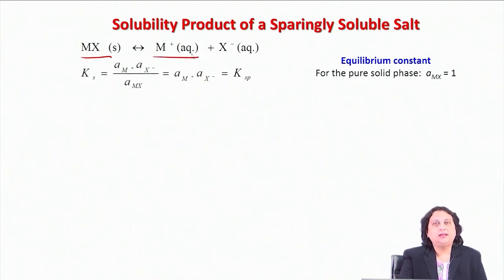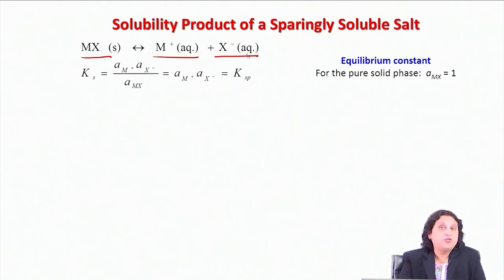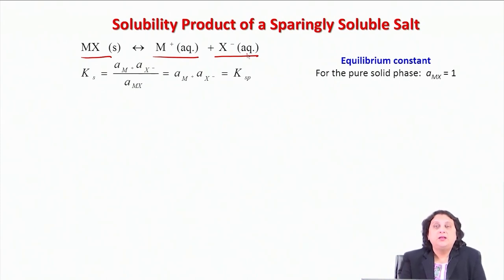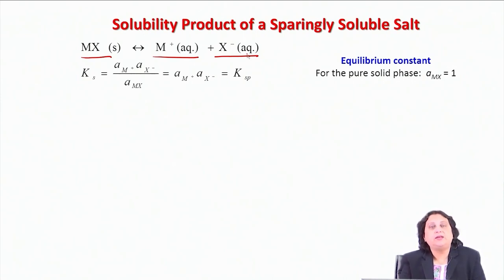The salt produces M⁺ ions and X⁻ ions in the aqueous medium. Since it is a sparingly soluble salt, only a very small concentration of these ions will be present. For example, if you measure the conductance of an oxalic acid solution (a good solvent), it is something like 3 millisiemens. But if you take a sparingly soluble salt, dissolve it, and take its saturated solution at a given temperature, its conductance would be something like 3 microsiemens. Therefore the concentration of ions carrying the current is much, much smaller for a sparingly soluble salt.